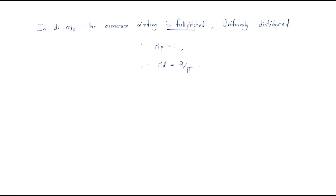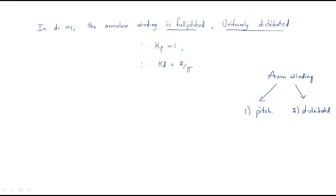In a DC machine, the armature winding is full pitched and uniformly distributed. To construct any armature winding, we have to look at two cases: first, the pitch of the winding — whether it is short pitch or long pitch; and second, the distribution of the winding — whether it is uniformly distributed or not. Here the armature winding is full pitch, represented by the pitch factor KP = 1.